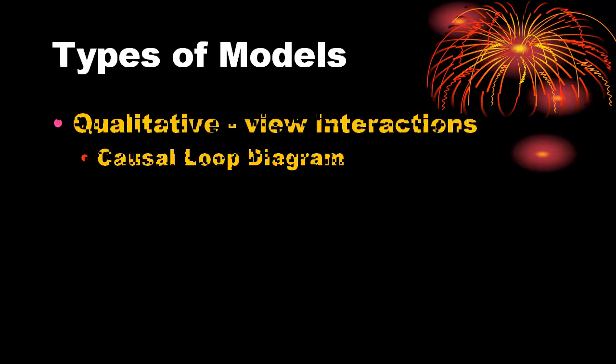While there are numerous ways to represent models, there are two general classes. Qualitative models are used to provide a visual representation of the interactions among relevant elements. The causal loop diagram, of which there are several variants, is the type of diagram most often used for this purpose.